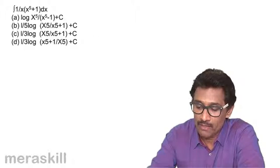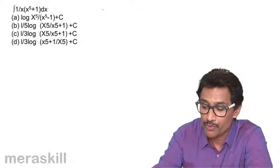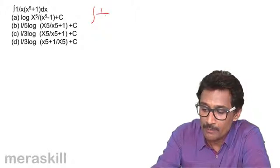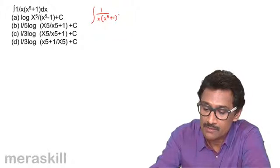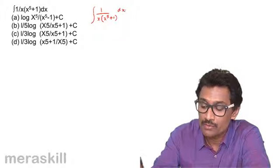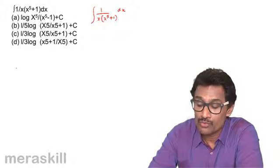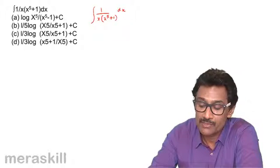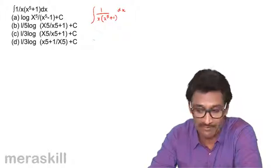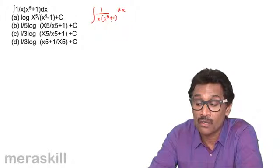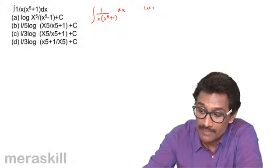How do we go about doing this? It is basically one upon x into x raised to five plus one dx. We are bound to take x raised to five, so we have to do a substitution.